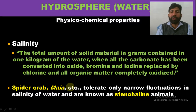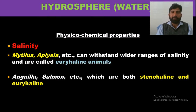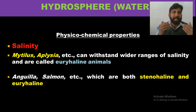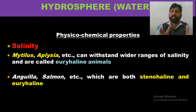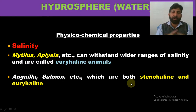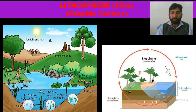Animals such as Mytilus and Aplysia can withstand a wider range of salinity and are termed euryhaline animals because they can tolerate changes from lower to higher salinity. Eels, fish, and salmon can be both stenohaline and euryhaline — as sea fish they can adapt to both narrow and wide salinity ranges.